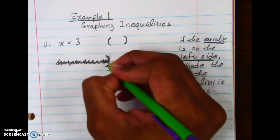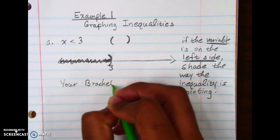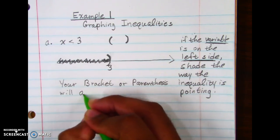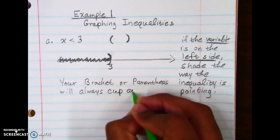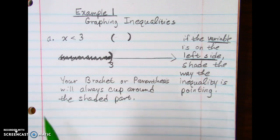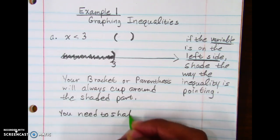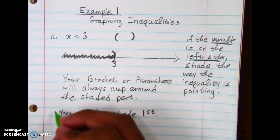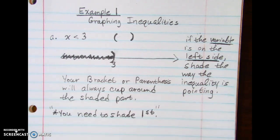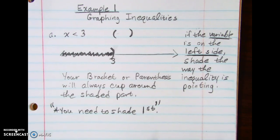Your bracket or parenthesis will always cup around the shaded part. That means you need to shade first, and then choose the parenthesis or bracket that cups around that shaded part. Shade first — that's important. So for part A, we use parentheses since there's no equal-to sign.